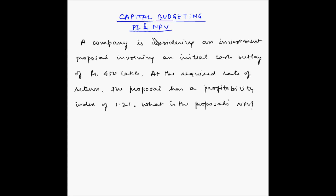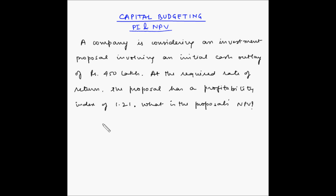Let us look at another example of capital budgeting. This example involves profitability index and net present value. A company is considering an investment proposal involving an initial cash outlay of rupees 450 lakh. At the required rate of return, the proposal has a profitability index of 1.21. What is the proposal's net present value?